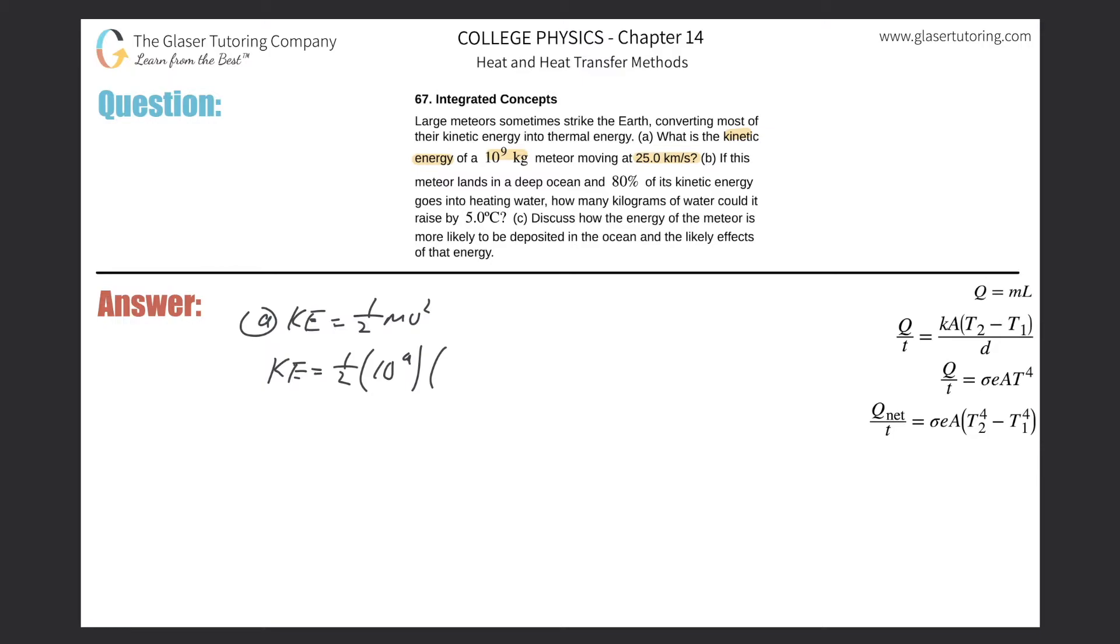Remember, this has to be in meters per second, not kilometers per second. So 25 kilometers is the same as 25,000 meters, right? And that would be the rate per second. So 25,000 squared.